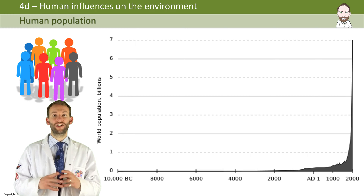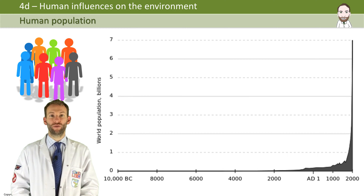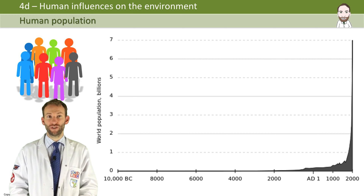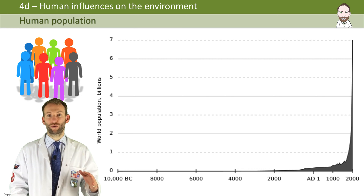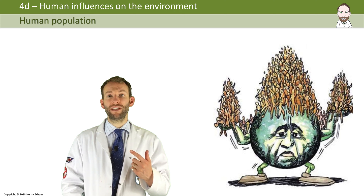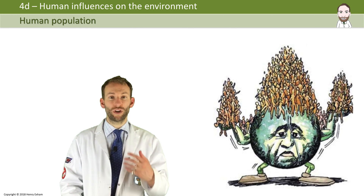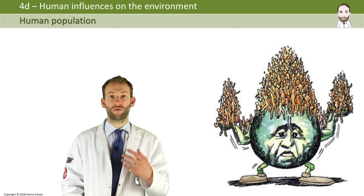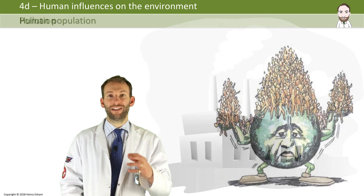In the last 100 years the human population has absolutely exploded — what we call exponential growth — and it has had a huge impact on the environment. The effects are now being experienced right across the world: there is a shortage of food in some countries, more land is being used for building and farming, there is more pollution being produced, and the world's resources are running out. This is just not sustainable.